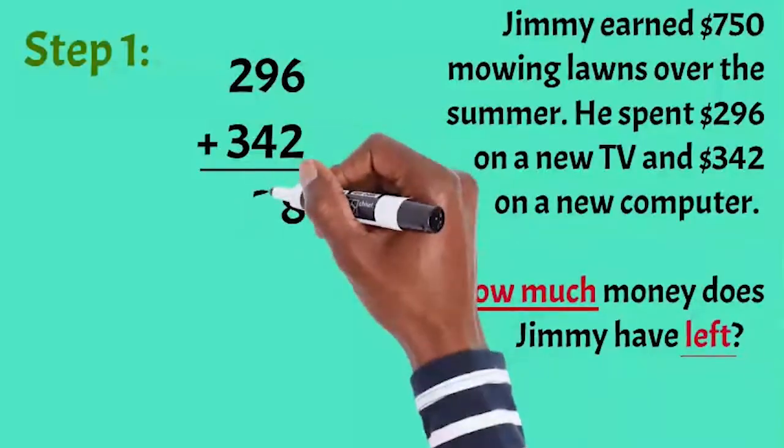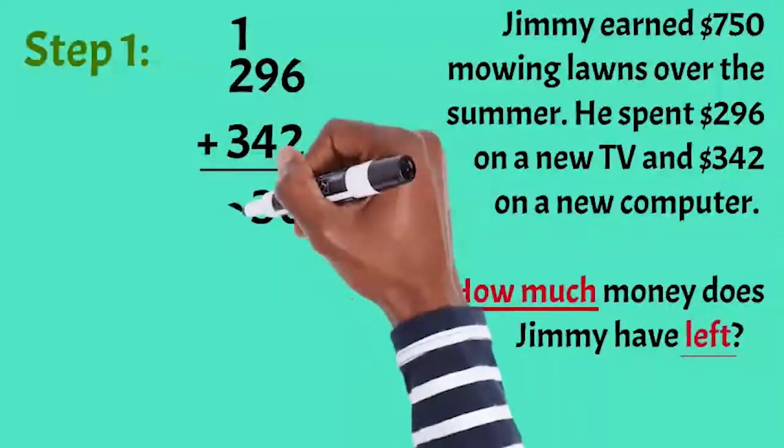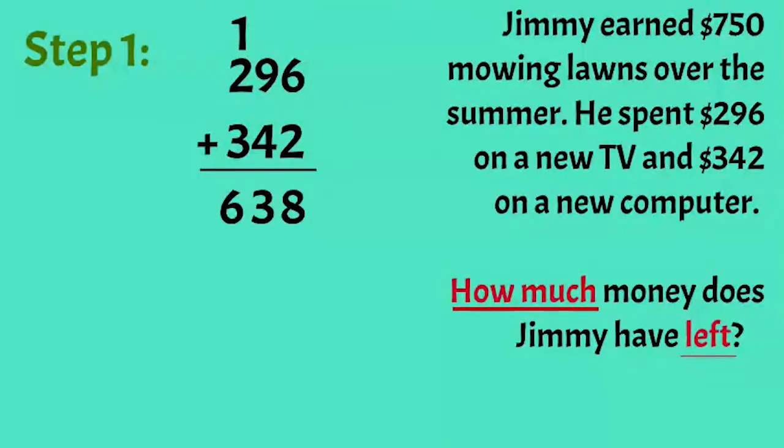I'll start with the ones place, then add the tens place, making sure to carry over the one, then add the hundreds. So Jimmy spent $638 in all.